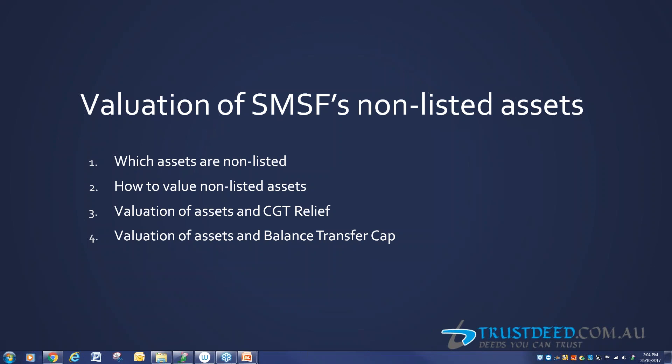From 1st of July 2017 there is a limit on how much can move from accumulation account to retirement phase, and that figure stands at 1.6 million, to be increased by $100,000 increments — so it will be quite some time before we see an increase to 1.7 million. The balance transfer cap figure of 1.6 million depends on total superannuation balance, which is a new term I'm going to discuss, and it's the underlying factor in determining the balance transfer cap used to commence a pension.